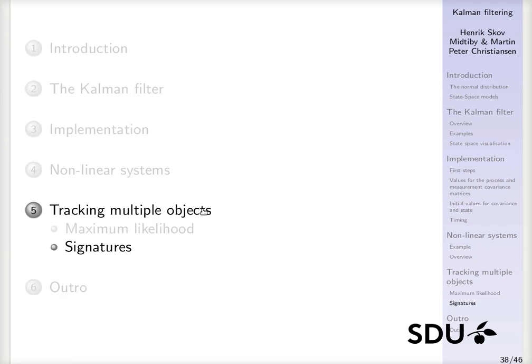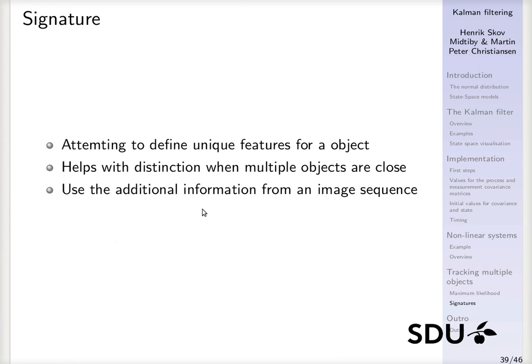One idea is to actually use or provide some kind of signature for the object you want to track, so you are able to specify it in a better way. That could be if you are somehow able to say that the red car is moving in this direction, then all the other cars than the red ones can be discarded, so you know exactly what to search for.